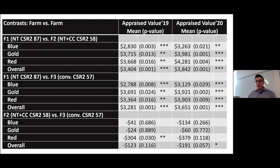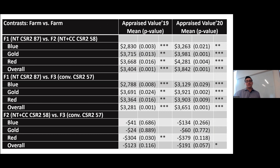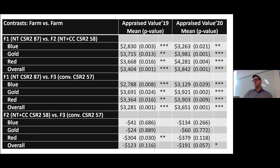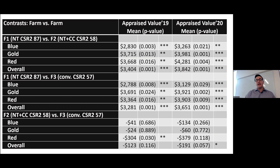We had three groups of appraisers with three appraisers each. One group — the blue group — did not receive any training on soil health or fertility. Another group — the gold group — received training on fertility but not soil health metrics. The red group received training from Marshall, Sarah, and Jim Jensen on soil health and soil fertility in October 2019. We had them create appraisal reports for these three farms in April 2019, and then again in March 2020 — pre and post training. That gave us a total of 54 appraisal reports.